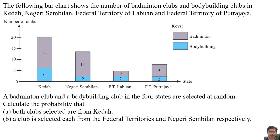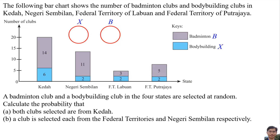A bar chart shows the number of badminton clubs and bodybuilding clubs in Kedah, Negeri Sembilan, Federal Territory of Labuan, and Federal Territory of Putrajaya. A badminton club and a bodybuilding club from the four states are selected at random. Let B represent badminton and X represent bodybuilding. The bar chart can be represented by a Venn diagram.